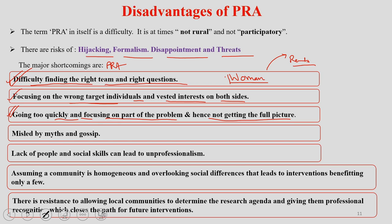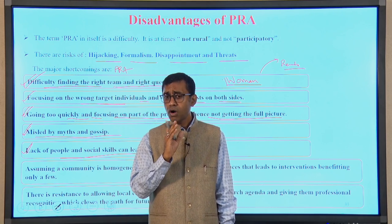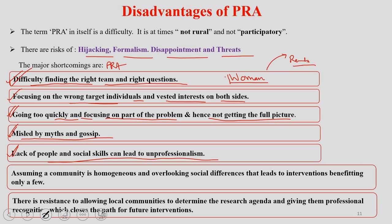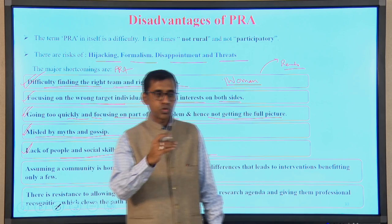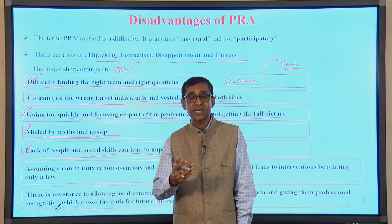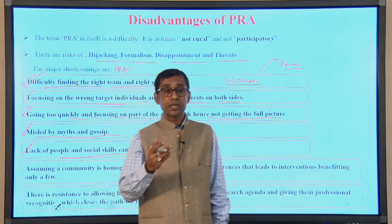Focusing on the wrong target individual and vested interests on both sides is a risk in PRA. Some team members may not have the tenacity or patience to listen and move slowly, and may be too quick to focus on part of the problem instead of getting the full picture. There is also a chance of getting misled by myths and gossip, which are common in rural areas. Lack of people and social skills can lead to unprofessionalism.